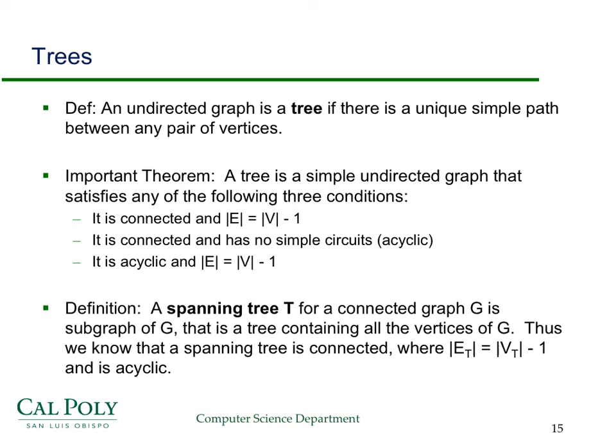Finally, a spanning tree, which we're going to use a lot, a spanning tree for a connected graph is a subgraph of G that is a tree that contains all the vertices of G. Thus, we know that a spanning tree is connected. The number of edges has to equal the number of vertices minus one and it's acyclic.